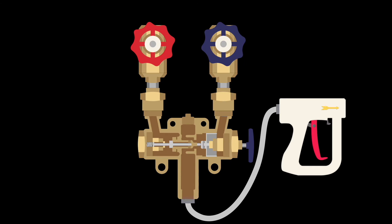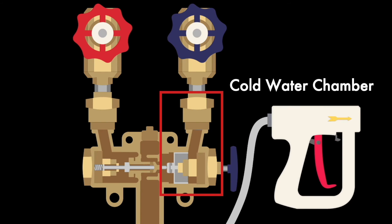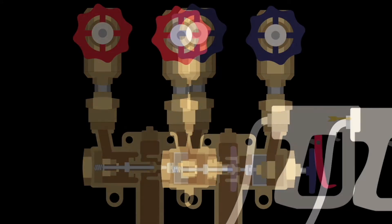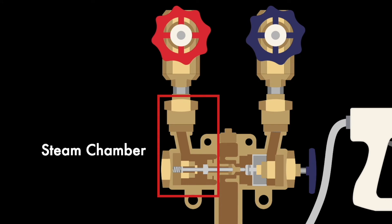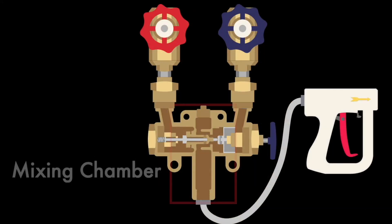The Duramix 8000 is comprised of three chambers. The blue valve on the upper right controls the cold water chamber connected to your factory's water source. The red valve controls the steam chamber connected to your factory's steam source. The steam mixes with the cold water in the mixing chamber to instantly create hot water at your desired temperature.